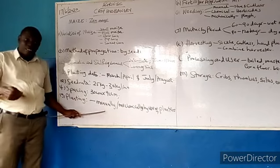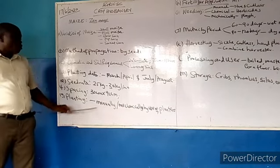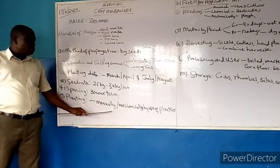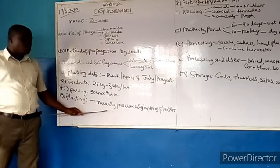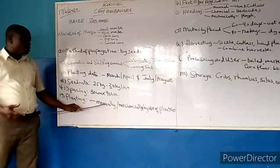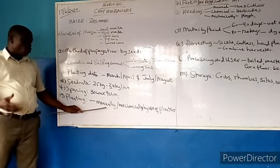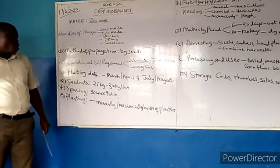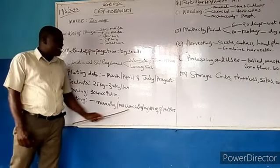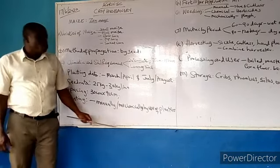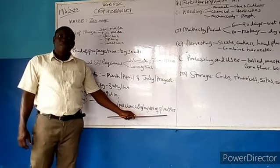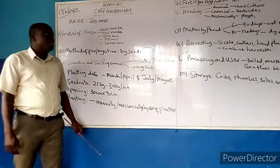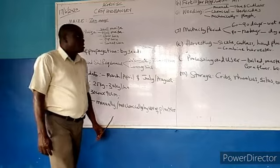For planting, you can plant maize manually using a stick or cutlass to dig the ground and put the seeds in. You can also plant maize mechanically using a planter, depending on the size of the farmland.